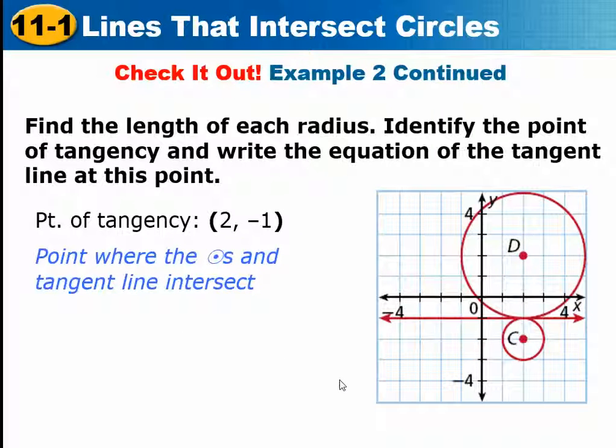You're also supposed to say the point of tangency. I didn't say that. The point of tangency would be X is 2, Y is negative 1, so 2, negative 1.